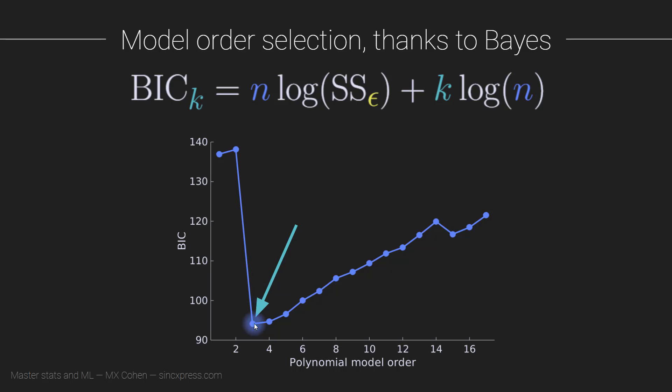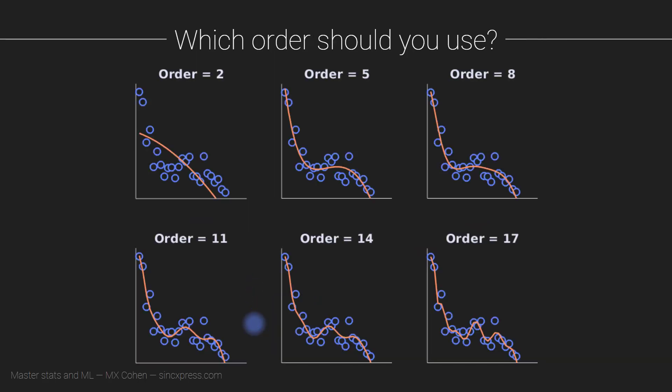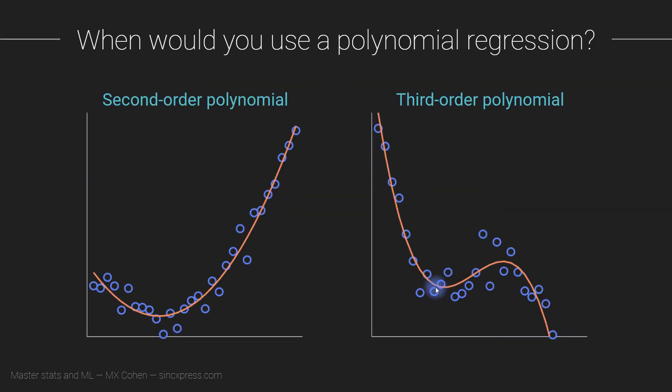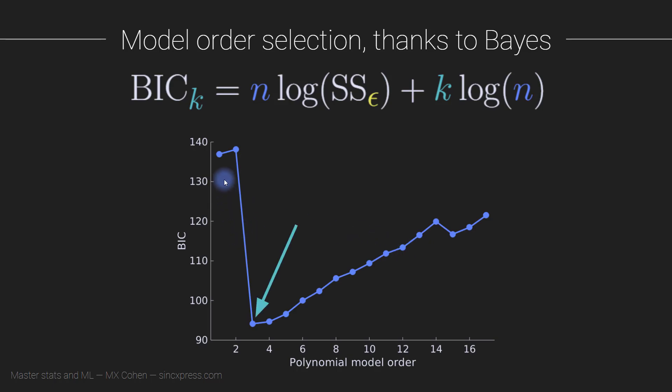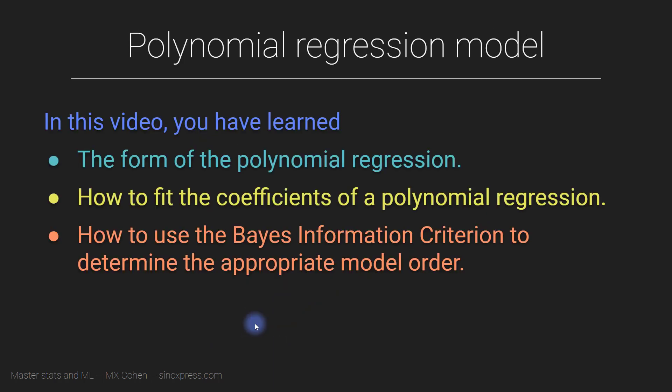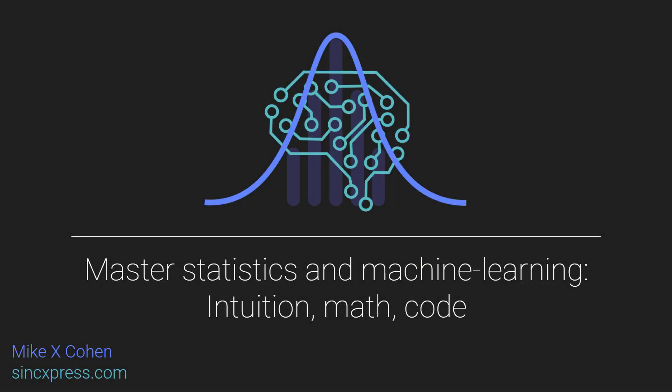And then what you want to look for is a minimum point here. So the minimum point is the optimal model order. In this case, that would be three, which is actually consistent with these data. In fact, I created these data as a third order polynomial plus noise. So it's no surprise that a third order polynomial turns out to be the best fit. So that's the Bayes information criteria. You fit the model with a bunch of different order parameters, you rerun a bunch of regression models, and you take the model that has the smallest Bayes information criterion as being the optimal model order. In this video, I showed you how to interpret and compute and set up a polynomial regression.